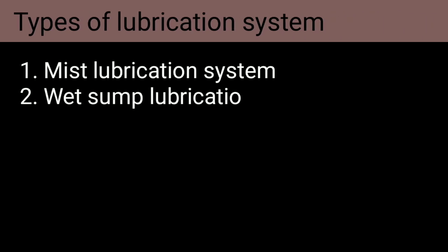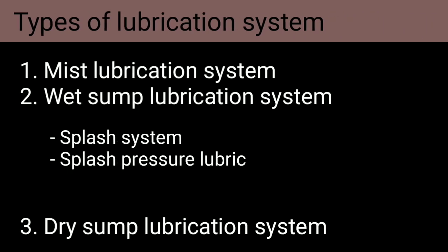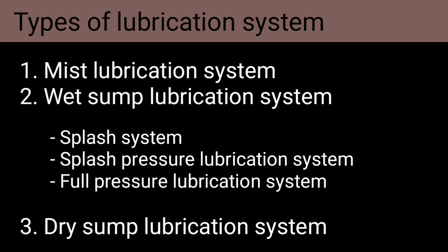In automobiles, generally we use three lubrication systems. The first one is mist lubrication system, the second one is wet sump lubrication system, and the third one is dry sump lubrication system.